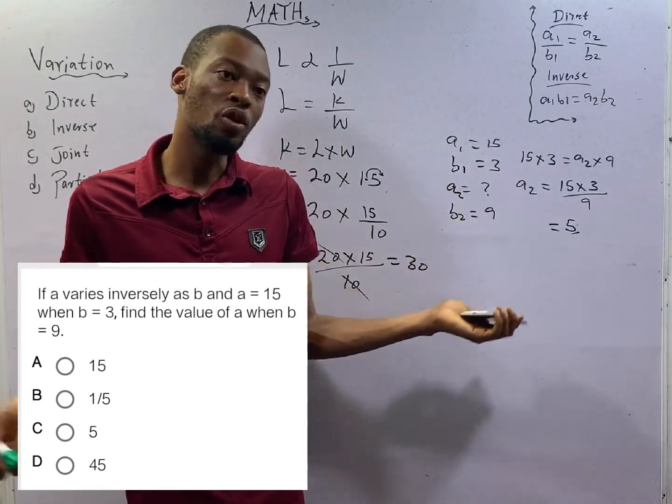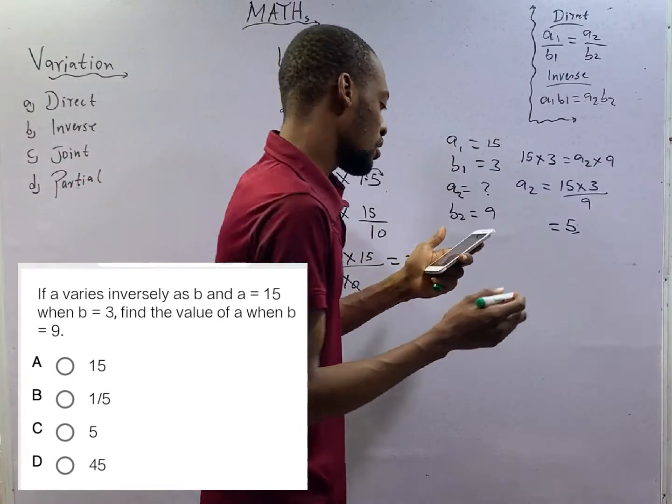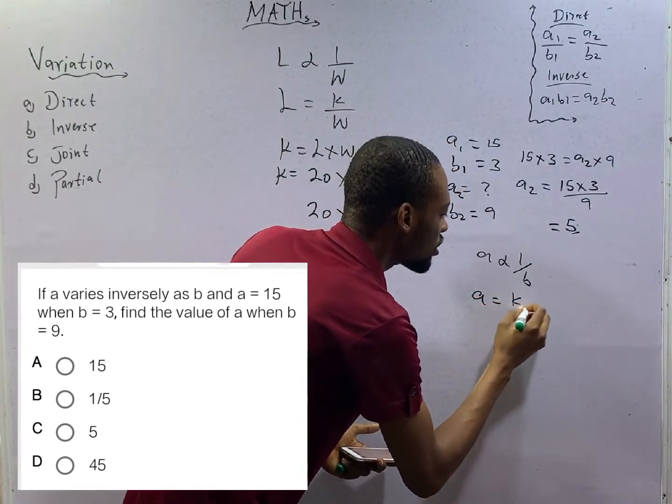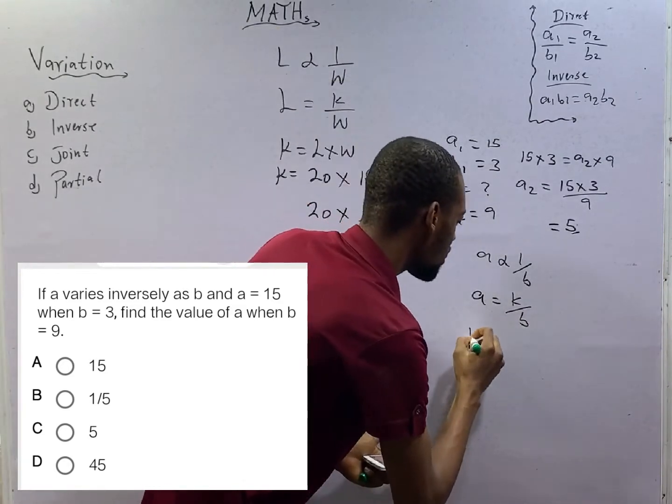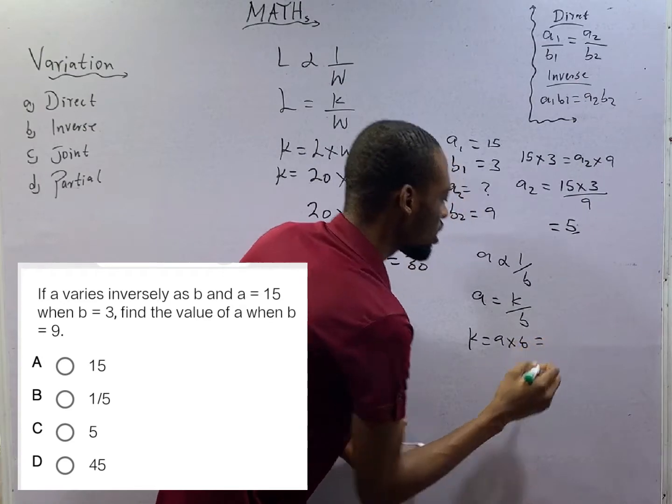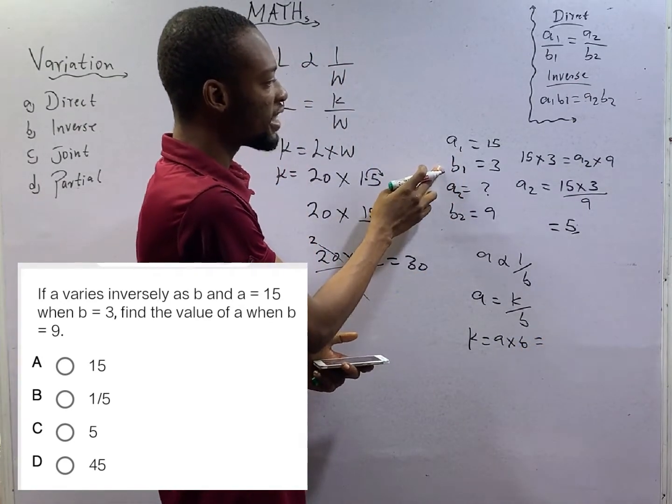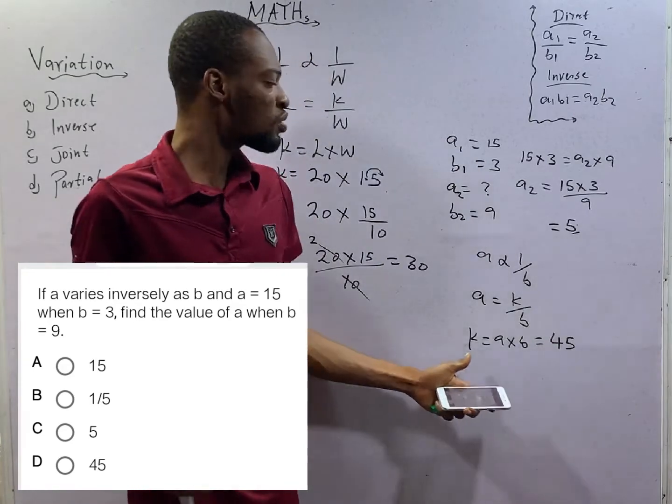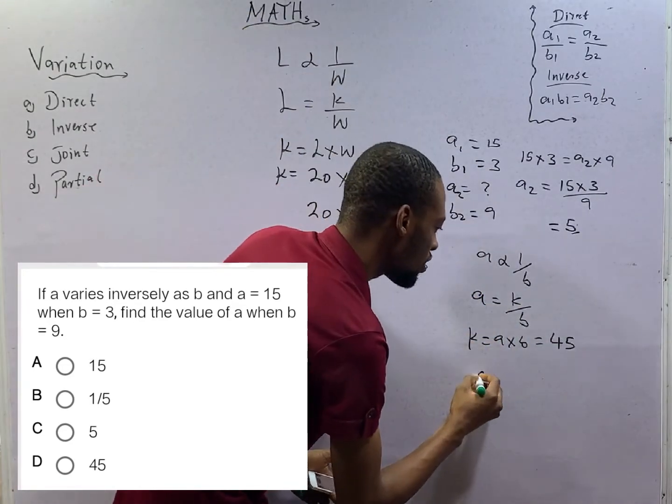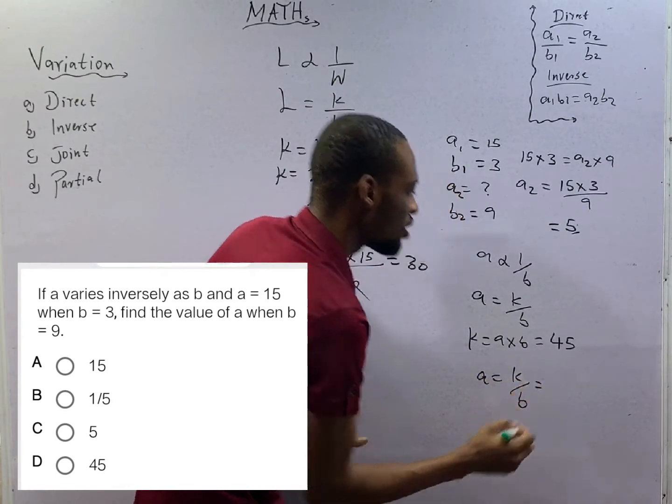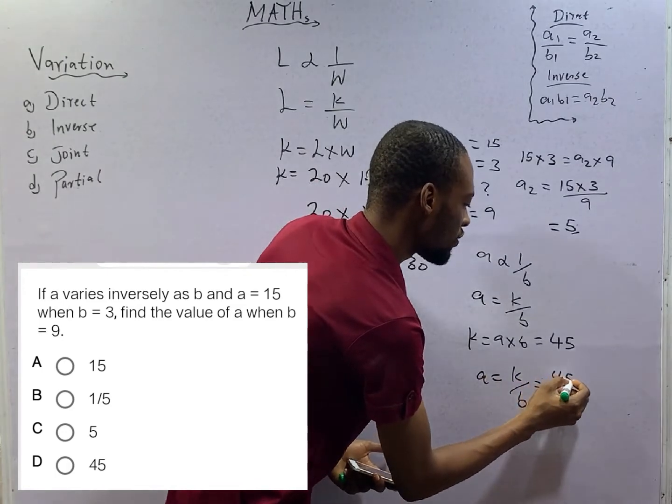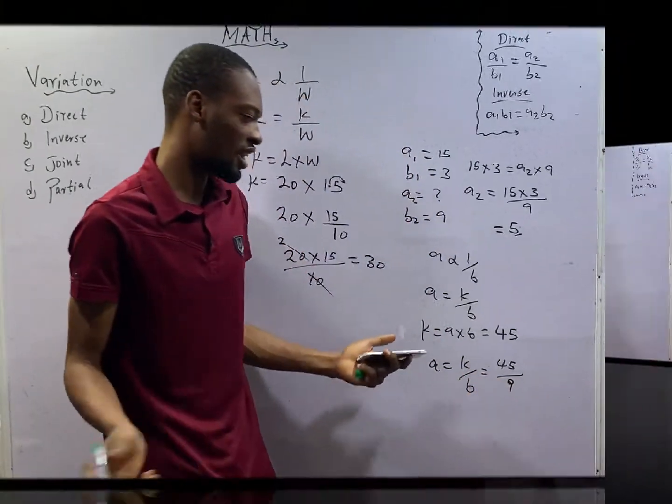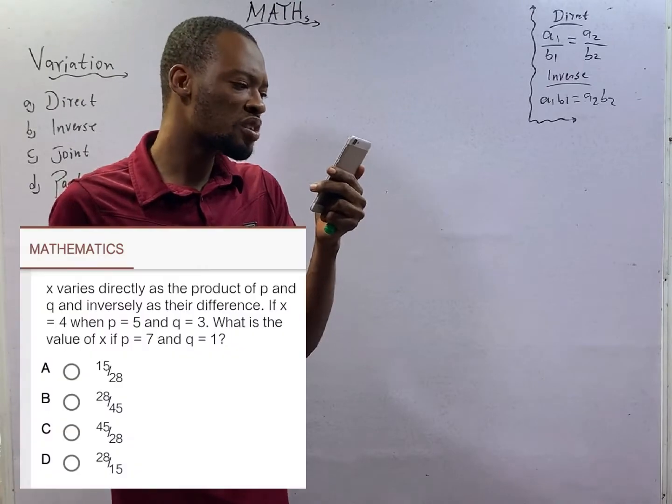If you are not cool with this shortcut, you can do it like this. A varies inversely as B, so A equals K over B, meaning K equals A times B, which is 15 times 3, giving you 45. The constant is 45. Since we've gotten the constant, we bring out this equation again. A equals K over B. The constant doesn't change, so 45 over the new B, which is 9, equals 5.